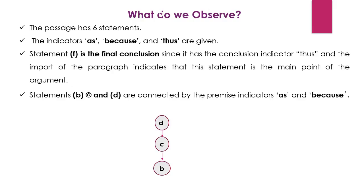As I said, the passage has six statements. The indicators 'as', 'because', and 'thus' are given. Statement F is the final conclusion since it has the conclusion indicator 'thus' and the input of the paragraph indicates that this statement is the main point of the argument. Statements B, C, and D are connected by the premise indicators 'as' and 'because'. So, the diagram goes from D to C to B — D being 'because the building of the library destroyed the native habitat', leading to C, 'as it has disappeared from the Lander campus', and then B, 'the well-known Greenwood white squirrel has become endangered'. These three premises are connected in a sequence.